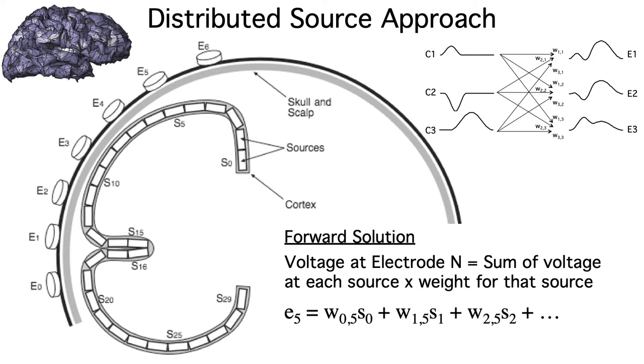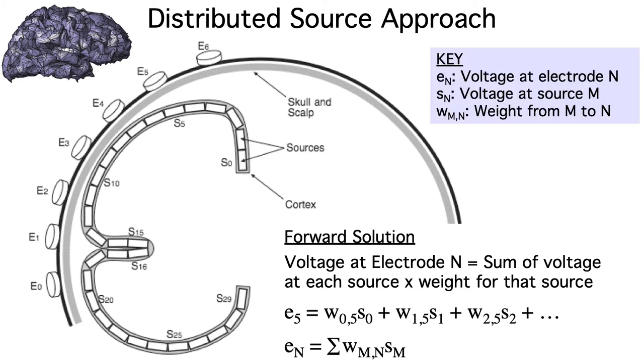This would be a very long equation, and we can express it more compactly using a summation symbol. This equation now represents every electrode N, every source S, and the matrix of weights between each source and each electrode, W.